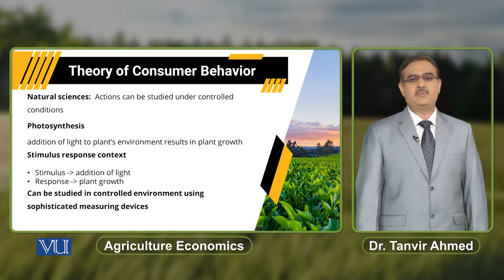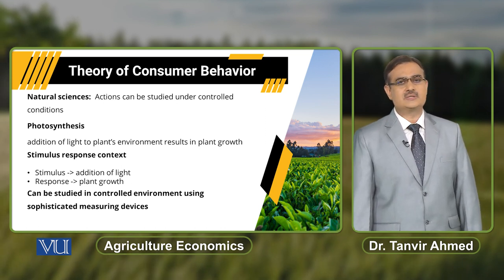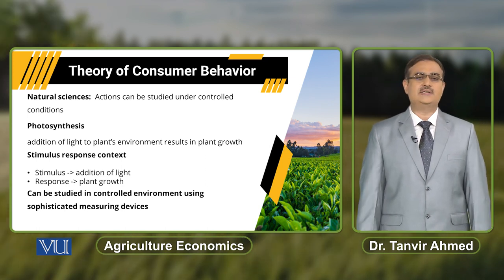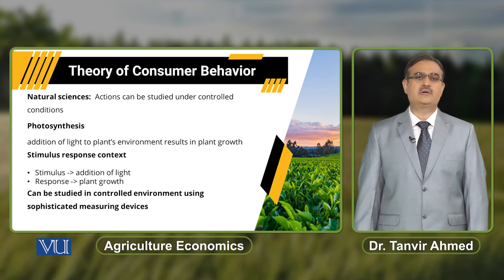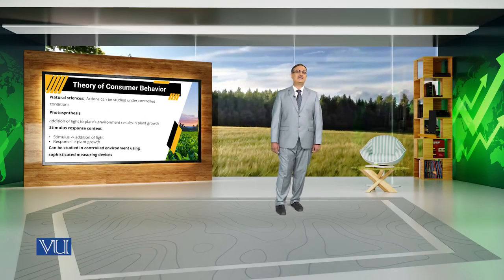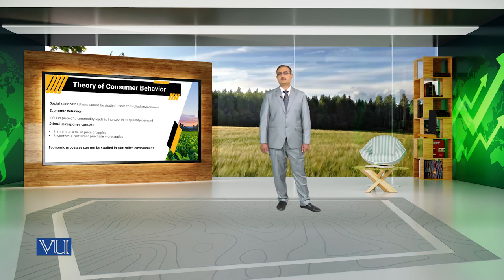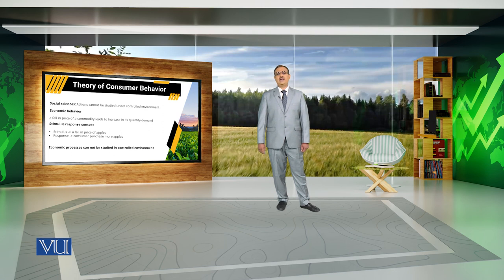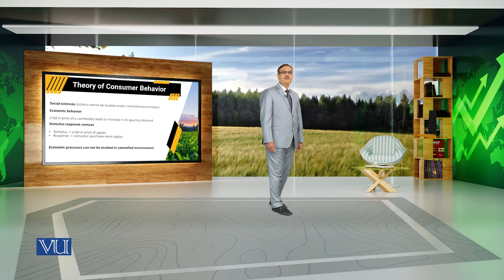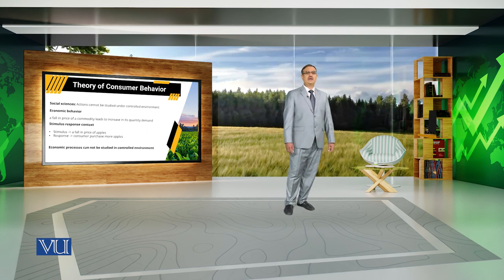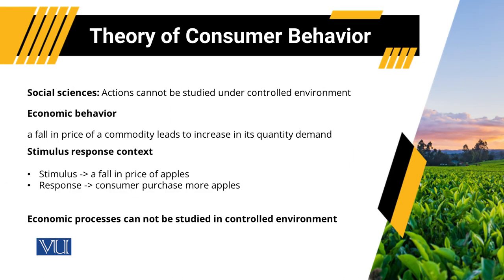While in social sciences, actions cannot be studied under a controlled environment. The economic behavior of consumers cannot usually be studied in such controlled conditionalities. For example, when there is a falling price of a commodity, it results in increasing quantity demanded for that commodity — here price acts as a stimulus while demand acts as a response. If the price of milk increases, it results in decreasing demand for milk, but that decrease in demand will be different for different individuals. Even twins with more or less similar socio-economic conditionalities will have different demand for milk at the same price level. So economic processes cannot be studied in a controlled environment.